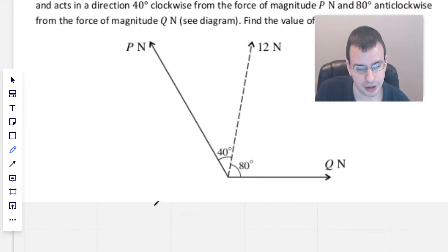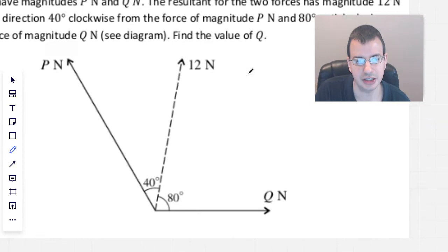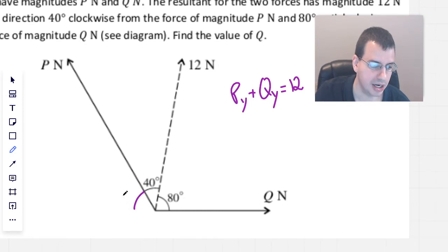So we can break it down into component vectors. 80 plus 40 is 120, 180 minus 120 is 60, so that angle's going to be 60 right there.